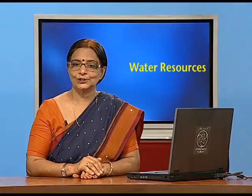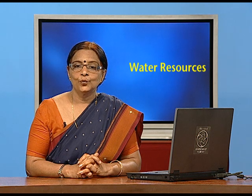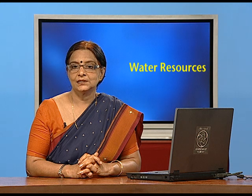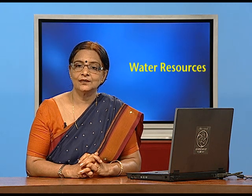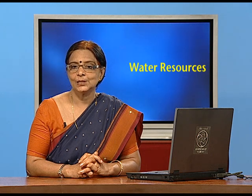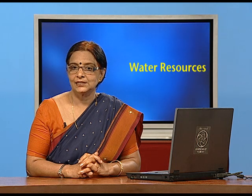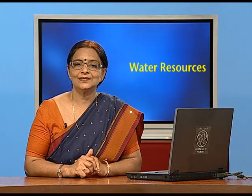In summary, under the chapter Water Resources, we have discussed the utility of water, why we require water, and important statistics about water on planet Earth. Earth is the only watery planet where life is possible. We covered surface water and groundwater, and the utility of these two types for various sectors — agricultural, industrial, and domestic.